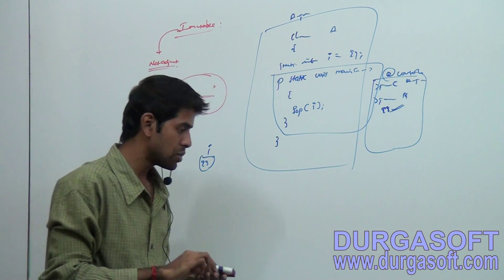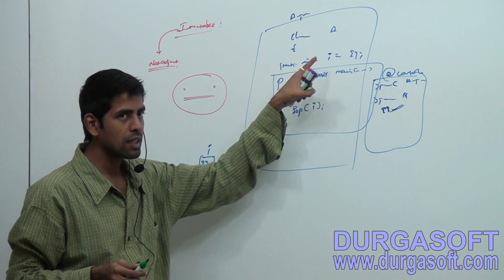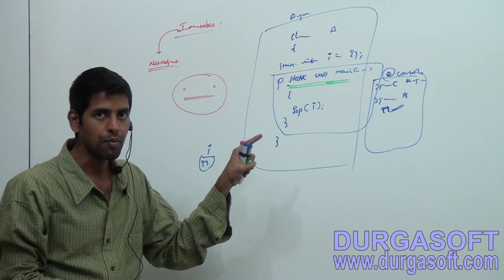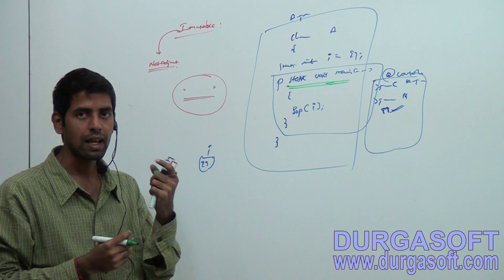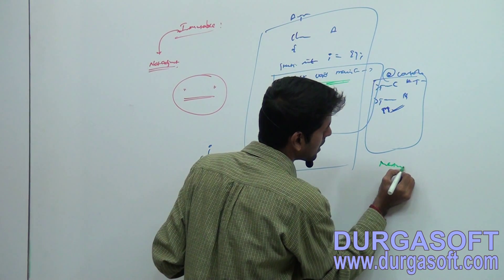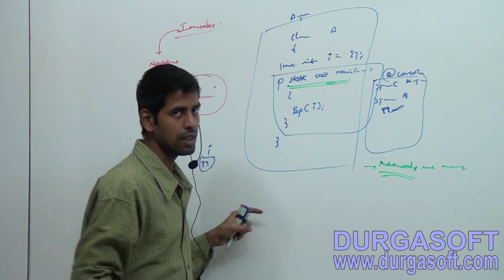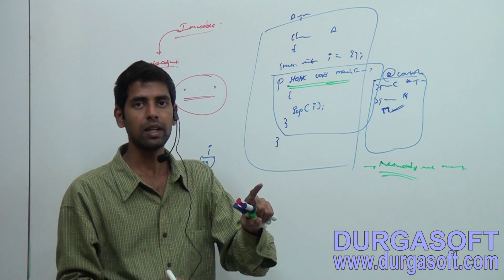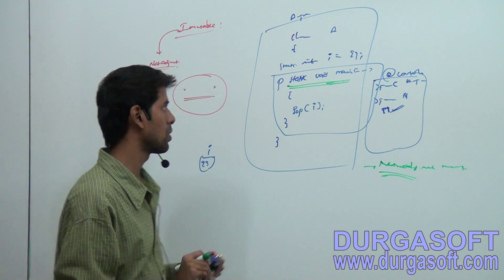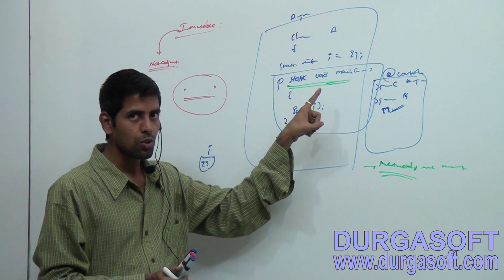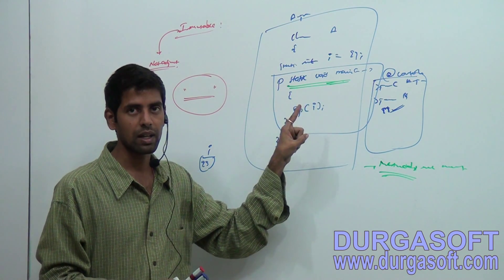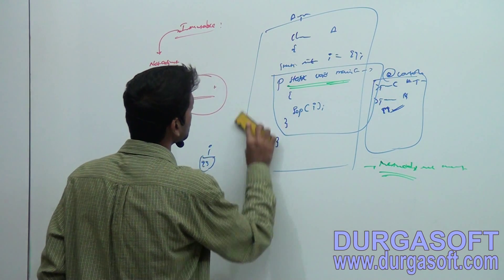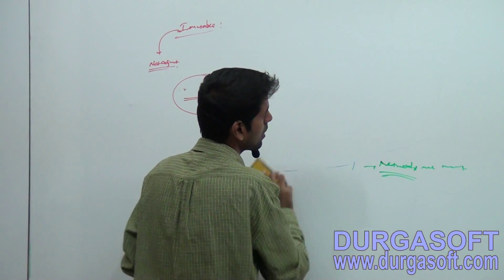Observe how you are accessing data through methods. Through methods only we are accessing data to perform any actions. Methods are a must - without these methods, we cannot do anything. Because of methods, we are doing some activity. Through methods only you can do anything - it is like a behavior, an activity which can be performed by a class object.